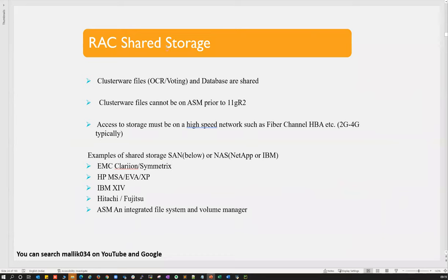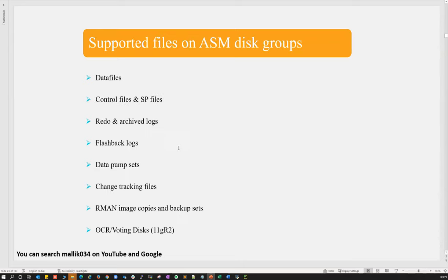We'll understand all networking concepts — private network IP range, VIP range, SCAN IP range — once we start with installation and architecture. In RAC, we always have shared storage. In that shared storage we have voting disk, OCR, and all data files, control files, redo log files, archive log files — everything kept under ASM disk groups as common shared storage.